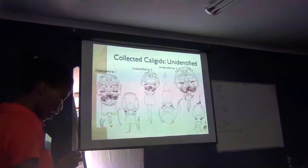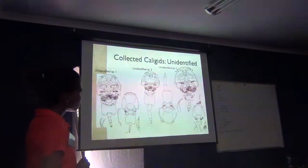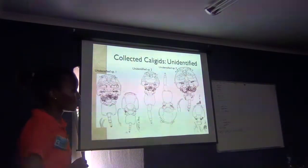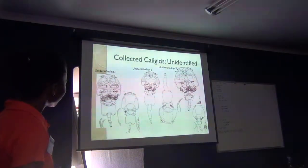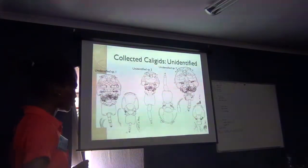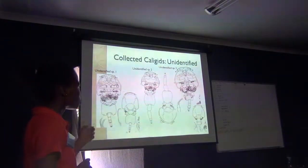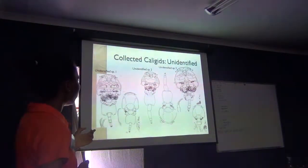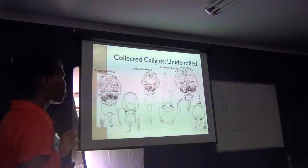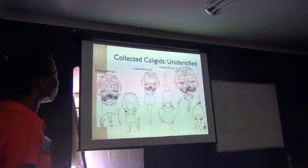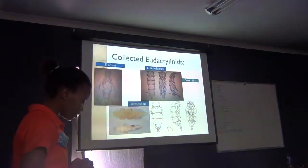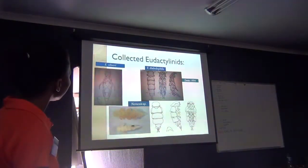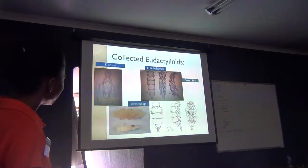We were also unable to identify three more species because of small sample size. Interestingly, they do look like Pupilina species we've identified, but they're also quite different. If we find more samples, we'll be able to conclude on what they actually are. In the next family, we were able to identify three species.